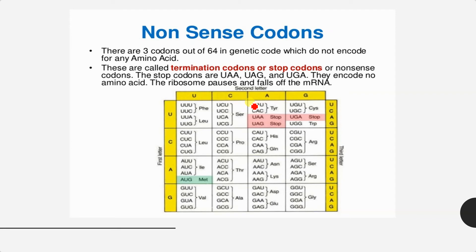Among the 64 genetic codes, three codons do not encode any specific amino acid. Instead they serve as termination codons or stop codons: UAA, UAG, and UGA. Once these codons are encountered, the ribosome falls off the mRNA and protein synthesis stops.